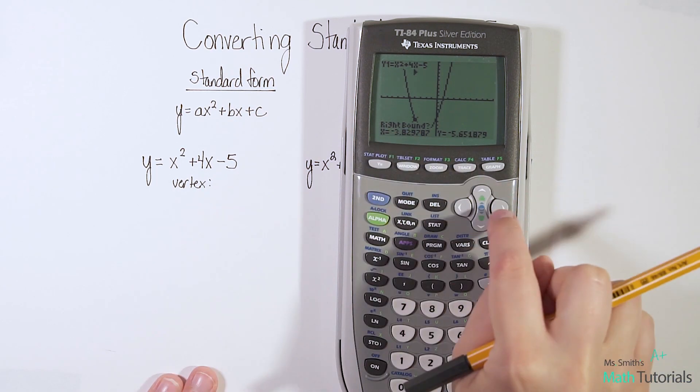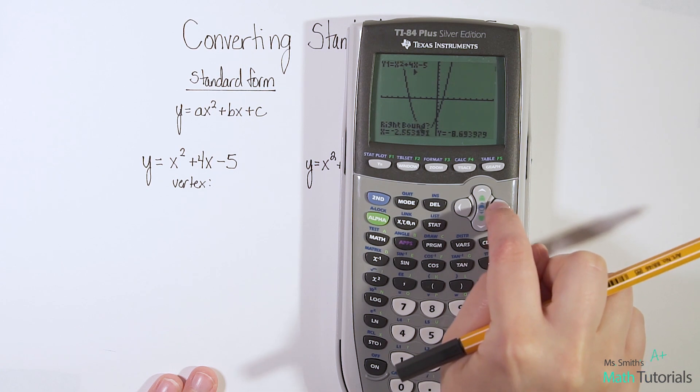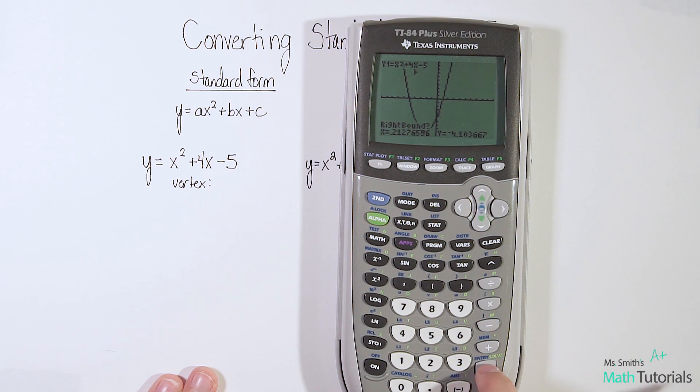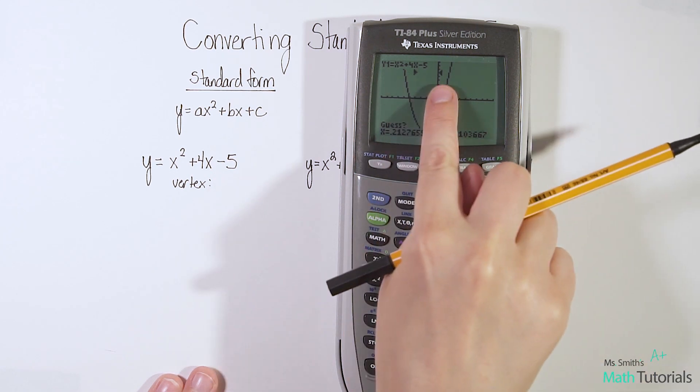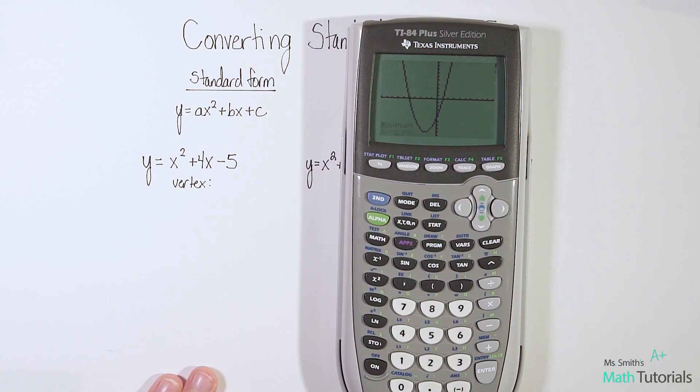Now it says right bound. So now we want to take that and move it a little bit right of the vertex, and lock that in. You'll see those two little triangles show up as you lock in each side. And you hit enter.